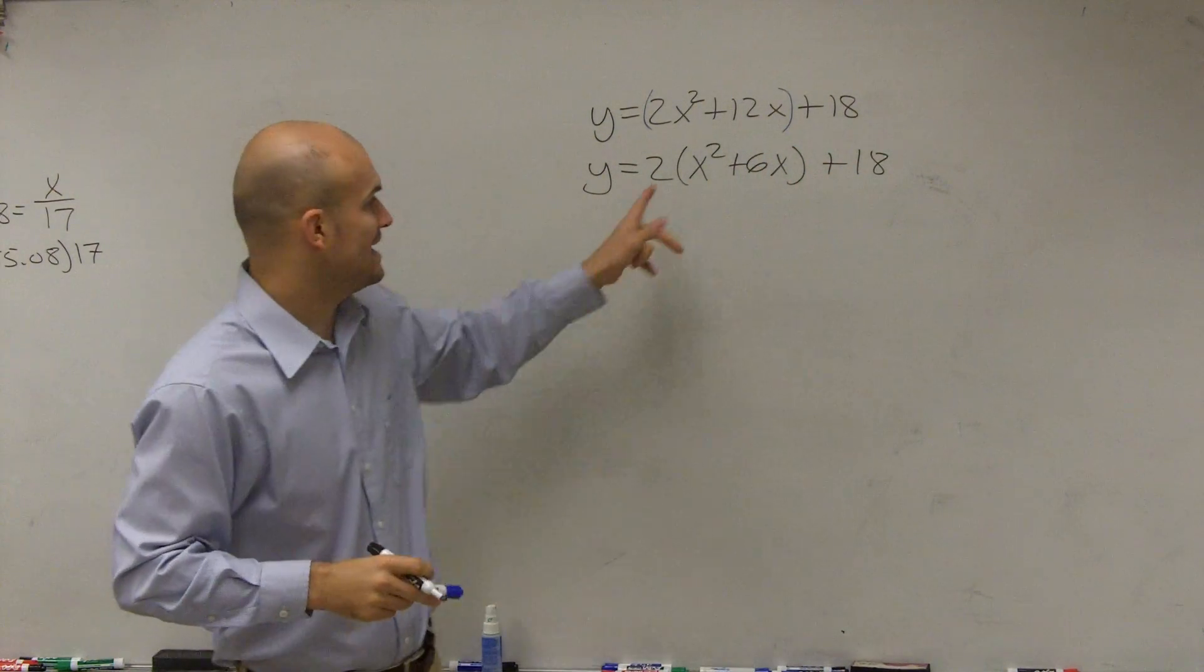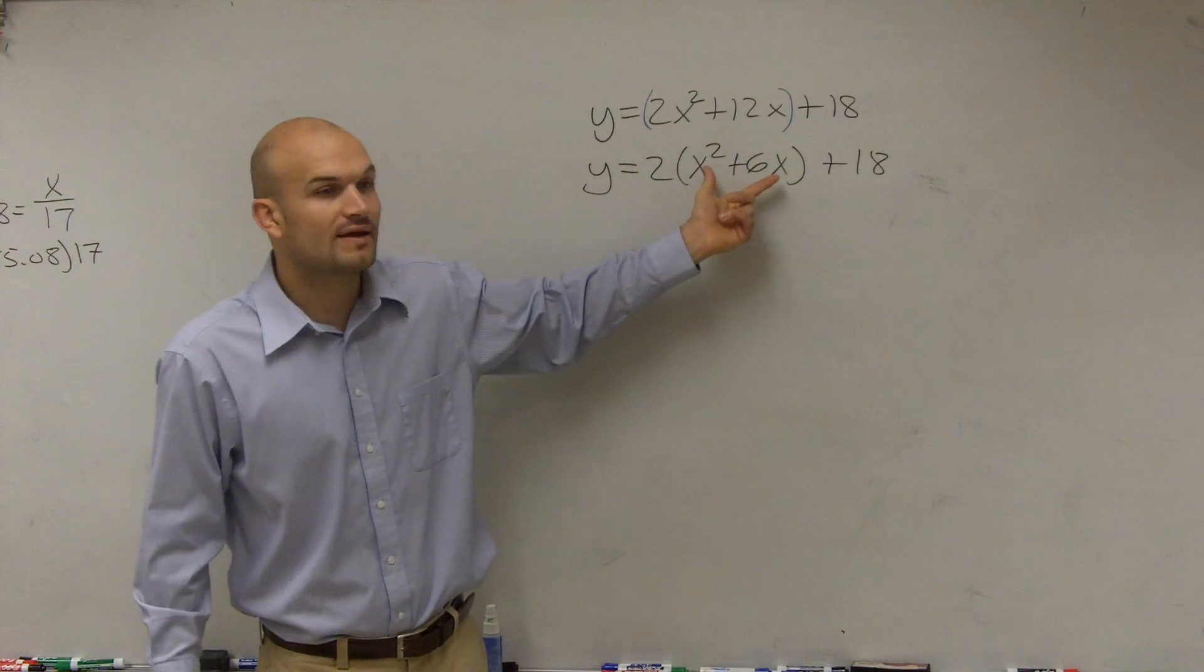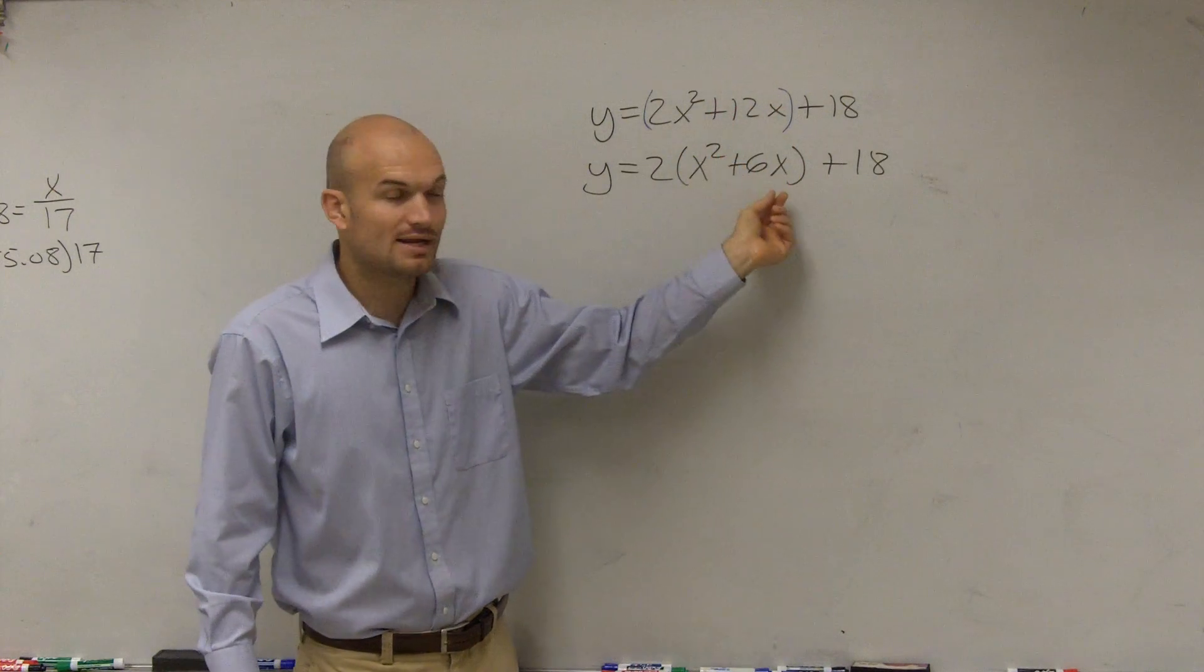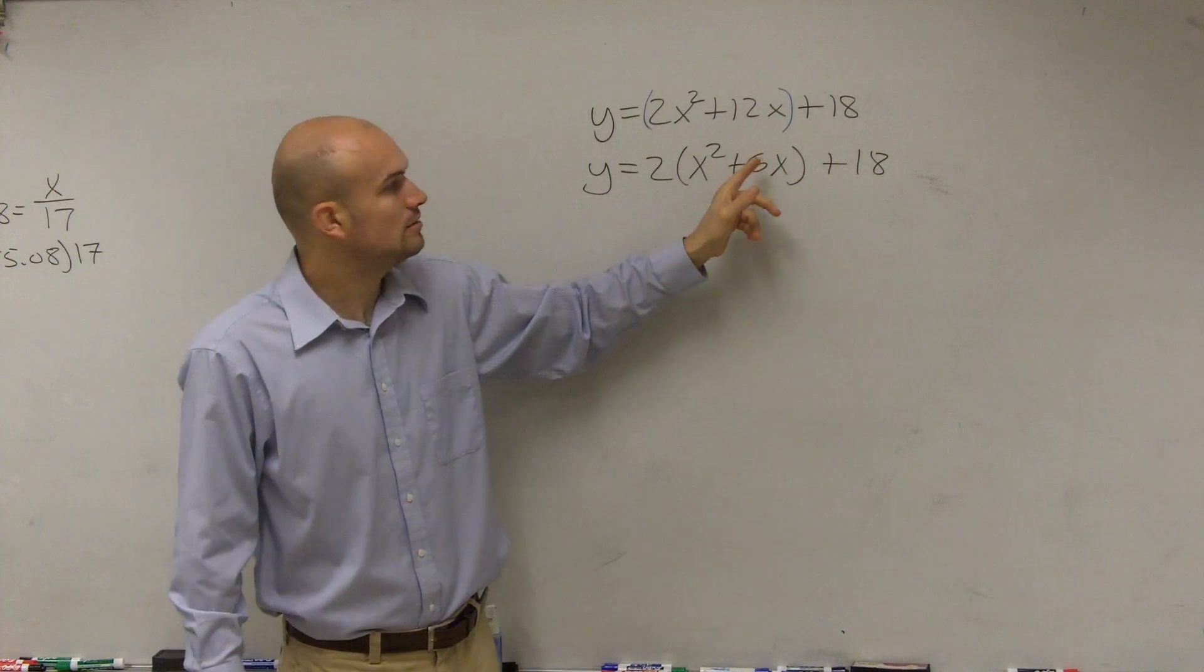Now that we have a equals 1, and we have a binomial in here, what we need to do is create a perfect square trinomial. So to create a perfect square trinomial—yes?